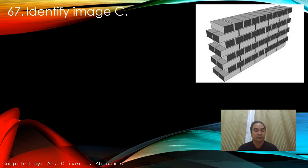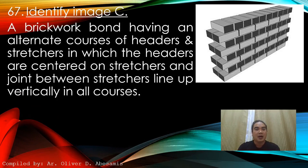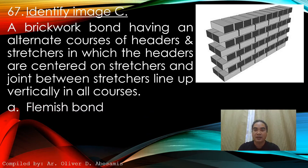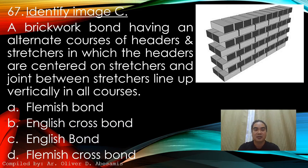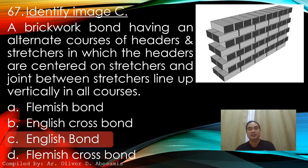Identify the image. A brick work bond having alternate courses of headers and stretchers in which the headers are centered on stretchers, and joints between stretchers line up vertically in all courses. A. Flemish bond. B. English cross bond. C. English bond. D. Flemish cross bond. Answer: C. English bond.